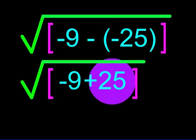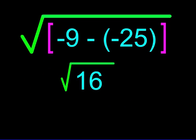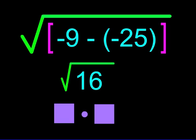Once again we have two negatives and we know that equals a positive. So we are looking at negative 9 plus 25. 25 minus 9 equals 16. We are now left with the square root of 16. What number times itself equals 16?